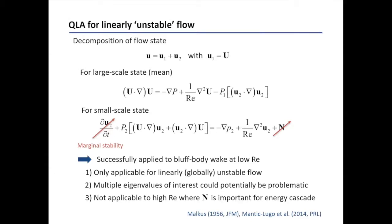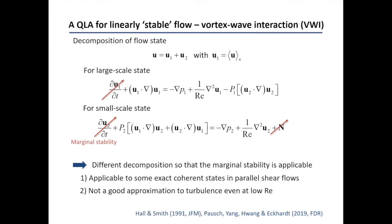The issue is that this technique is only applicable for linearly unstable flow. Also, if you have multiple eigenvalues, it can be potentially problematic because you have to deal with different eigenvalues separately. Third, the technique is in general not suitable for high Reynolds number flow because N becomes very important — it is the term that generates the energy cascade and turbulent dissipation.